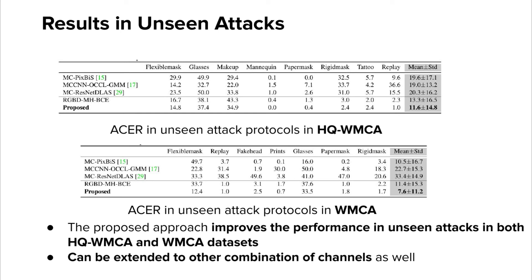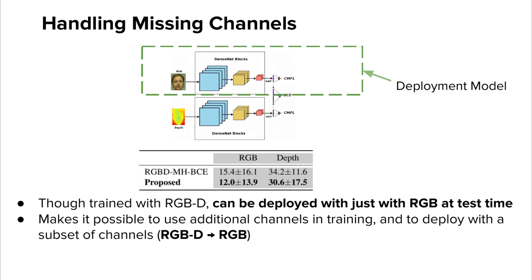The experiments were done using the RGBD channels, but it can be extended to other combinations of channels as well. Though trained with RGBD, this framework can be deployed with just RGB at test time — this is equivalent to the section of the network shown in the green box. Interestingly, this improves the results compared to a separate network trained and tested on RGB data alone, showing the usefulness of our approach for supervising individual channels based on the proposed loss function.